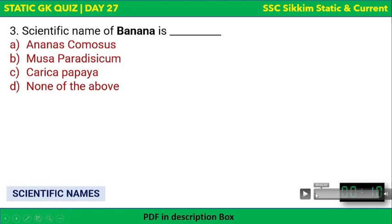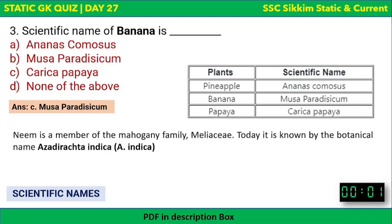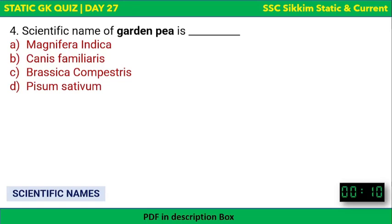Next question: What is the scientific name of banana? The options are Ananas comosus, Musa paradisiacum, Carica papaya, or Nymphaea. The correct answer is Musa paradisiacum — that is the scientific name of banana. For reference, pineapple is Ananas comosus, banana is Musa paradisiacum, and papaya is Carica papaya.